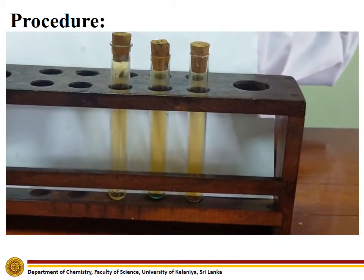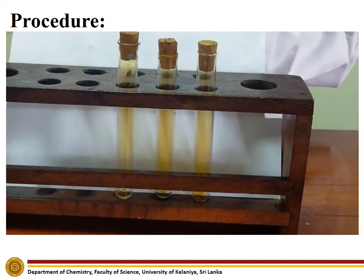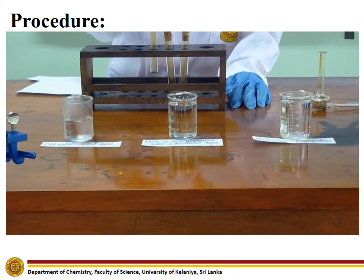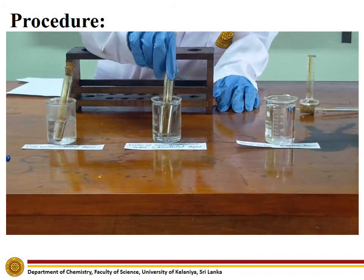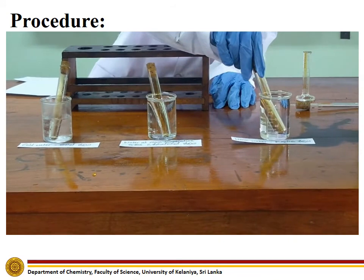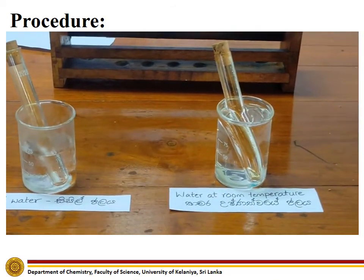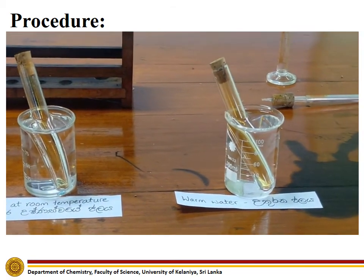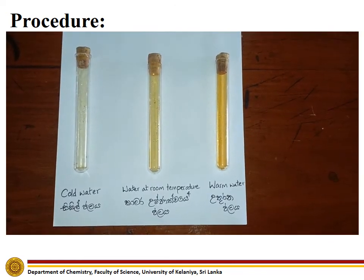After collecting the gas, close the test tubes tightly with rubber corks. Next, place the tubes — one each in beakers containing cold water, water at room temperature, and warm water. Observe the relative variation in the color intensity of them and compare with the one at room temperature.